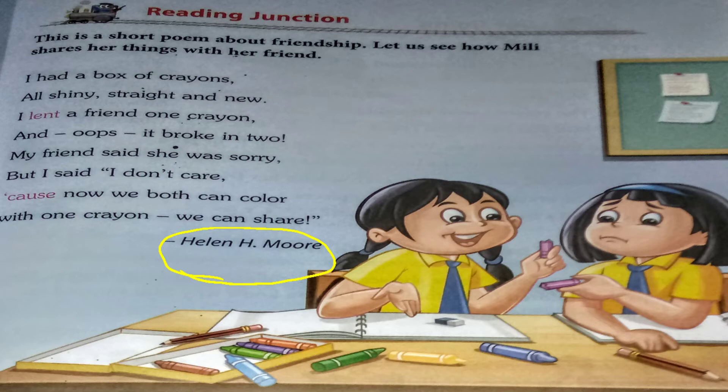In this poem, there were two girls sitting on a chair. One girl had a box of crayons. There is a box of crayons, and all the crayons are shiny, straight and new.